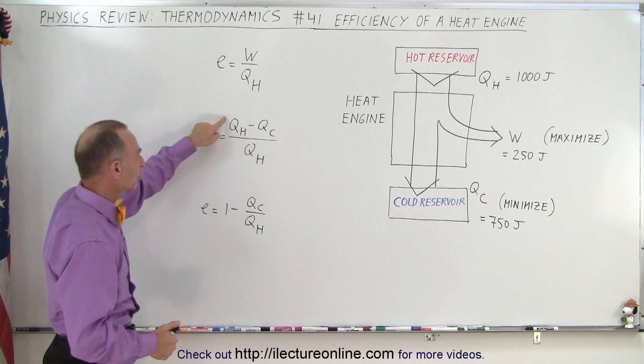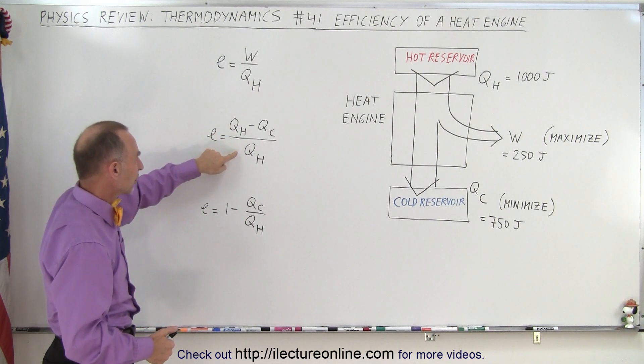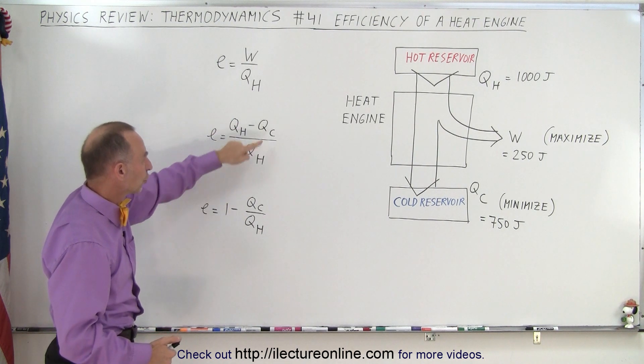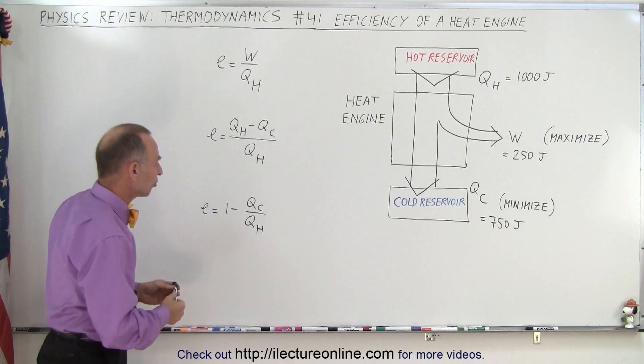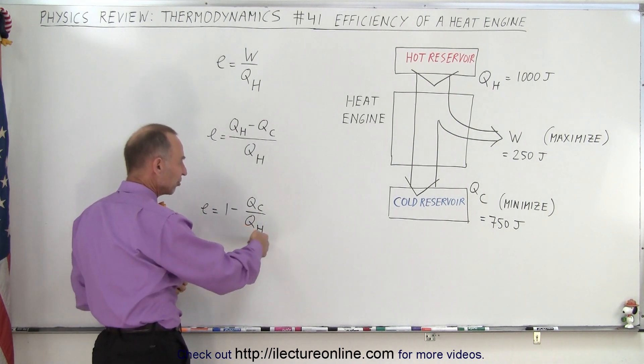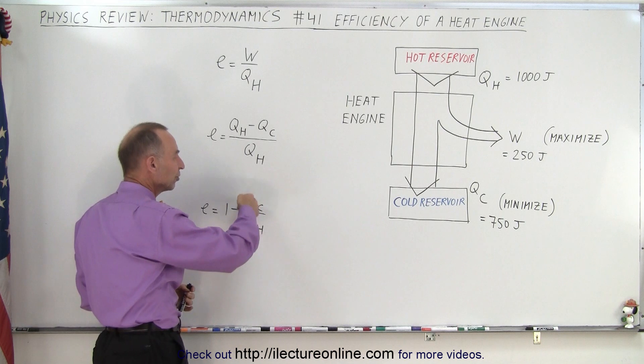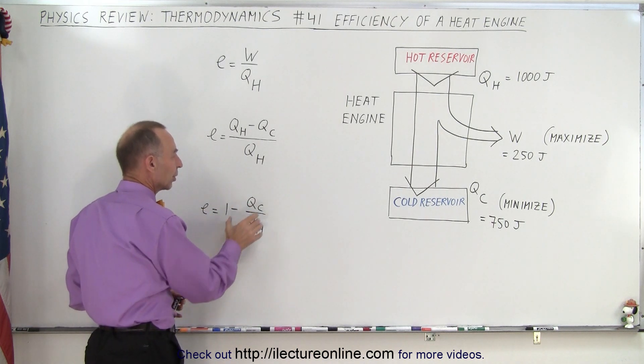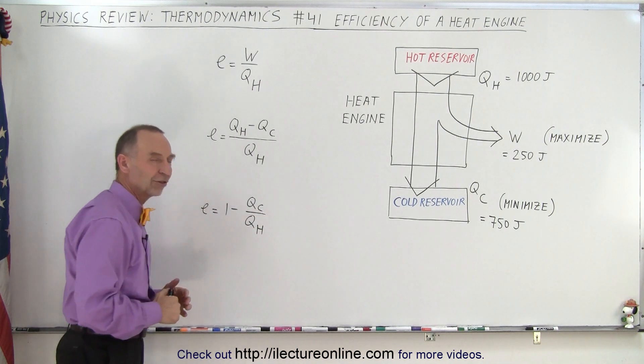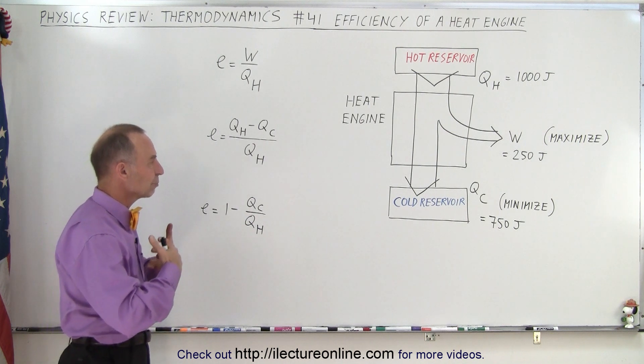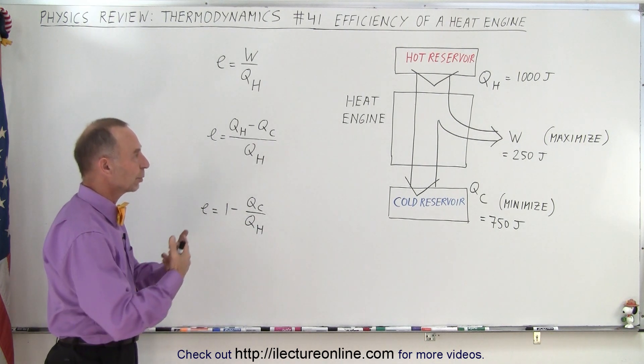Or if we divide the denominator into the denominator, Q-hot divided by Q-hot is 1 and then minus Q-cold over Q-hot. So essentially, to maximize the efficiency, you want to reduce this ratio by as much as possible. In other words, you want to exhaust as little heat as possible and utilize as much of the heat you draw in as possible to do the work.